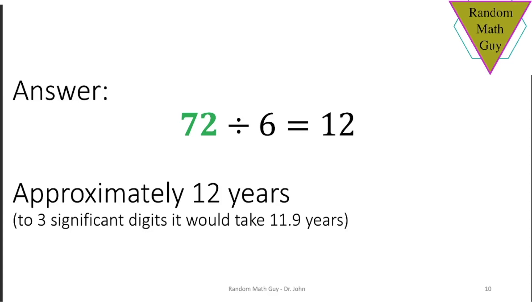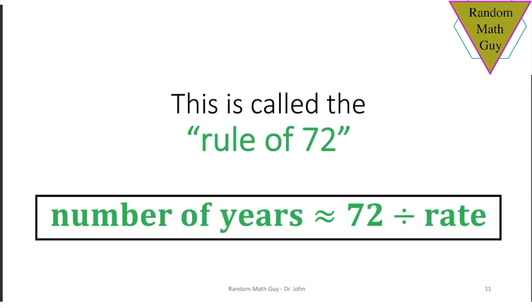This is called the rule of 72. Take whatever quantity in terms of a rate that you have and take 72 and divide by that rate, and you'll have the number of years that it'll take to double whatever you're measuring. Of course, there's limitations to how far this goes.